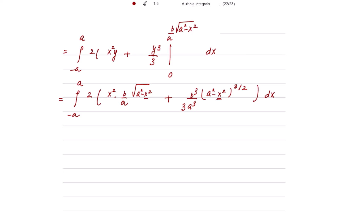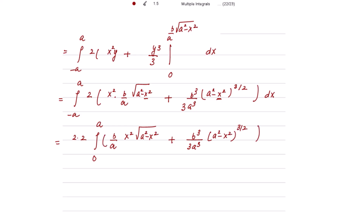Again, the limits are symmetric (-a to a) and both terms are even functions. So the integral becomes twice again, with the lower limit changed to 0. Taking the factor of 2 outside gives 2×2 = 4. So we have 4 times the integral from 0 to a of [(b/a)x²√(a² - x²) + (b³/3a³)(a² - x²)^(3/2)] dx.